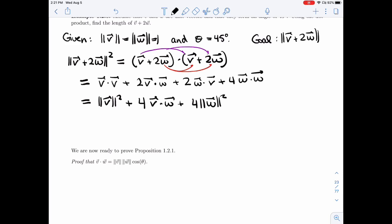Excellent. So now the only part I don't know is this dot product, but we have it right here. We have this proposition that tells us that the dot product is the length of V, length of W, and cosine theta.